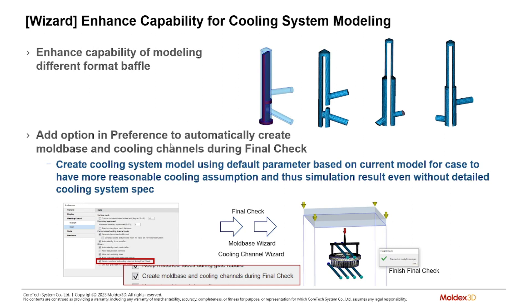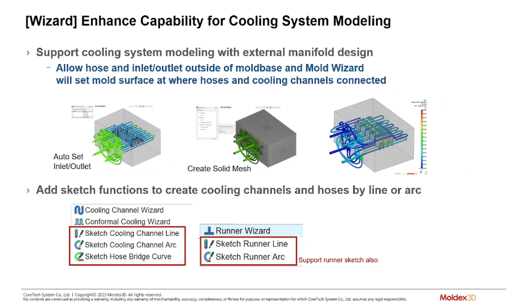We've also added a preference option to automatically create the mold base and cooling channels during the final check — implemented in 2022 but you can now uncheck this in the preferences menu. For external manifold design, anything outside the mold base needs to be attributed as a hose, and you can include lines or solid geometry for those hoses in the simulation with inlets and outlets. Sketch functions have been added to draw cooling lines, cooling channel arcs, hose bridge curves, runner lines, and runner arcs — these are attributed automatically.